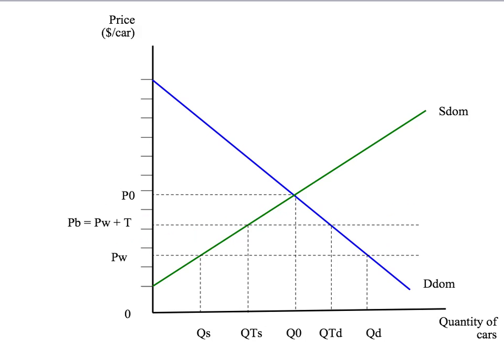Let's start by reminding ourselves of what happens under free trade and when we add an import tariff. With free trade, we have domestic demand, domestic supply, and the world price Pw. Given that world price, domestic consumers wish to buy QD units, domestic producers wish to sell QS units, and the difference between QD and QS is the level of imports under free trade.